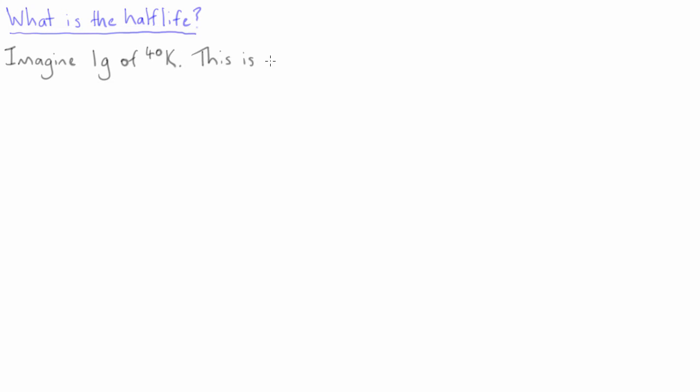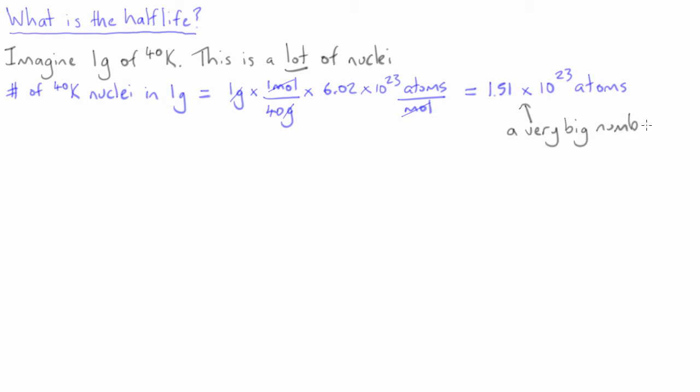For example, imagine we have 1 gram of potassium-40. If you do the maths, this turns out to be a very large number of atoms. 1 gram times 1 mole per 40 grams times Avogadro's number of atoms per mole is equal to 1.51 times 10 to the 23 atoms. This is a very big number, 151 with 21 zeros after it.